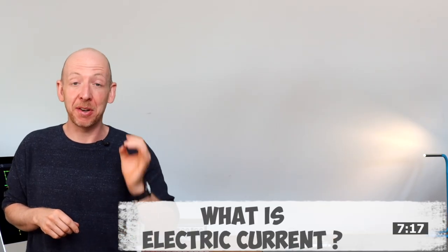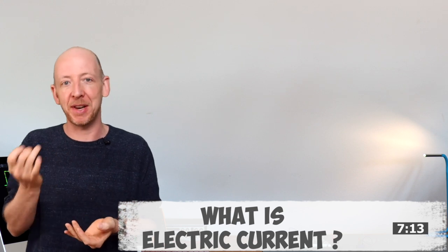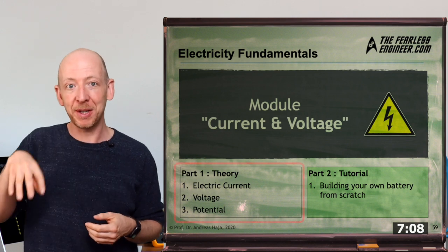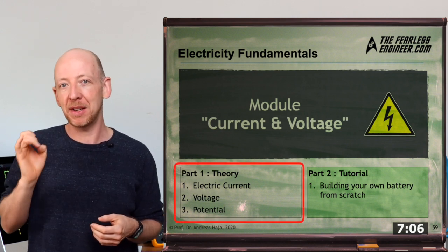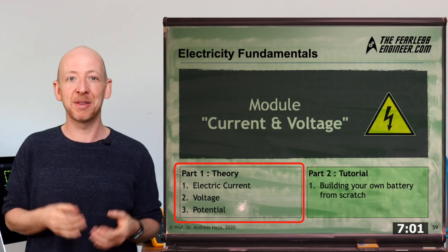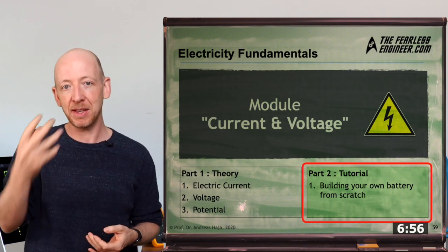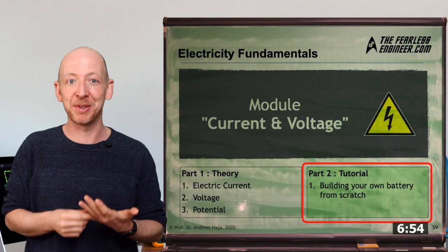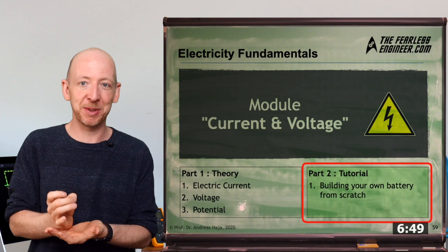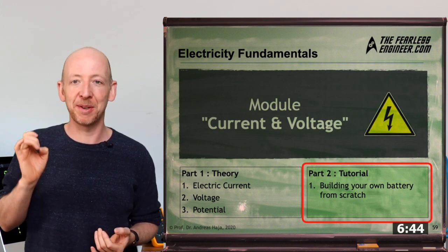In this module we will discuss current and voltage, which are absolutely fundamental in electronics. I have split this module into two separate videos. This first one is about the theory behind electric current, voltage, and also something called potential. In the second part, we will put our knowledge to the test and build our own battery from scratch using kitchen materials and some scrap metal. But now let's start with electric current.